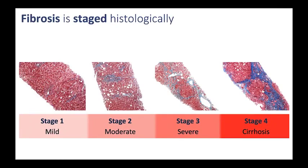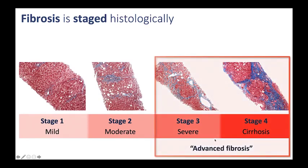Fibrosis is staged histologically. There are five stages of histologic fibrosis: stage 0, which is no fibrosis, and four stages of abnormal fibrosis — stage 1, mild; stage 2, moderate; stage 3, severe; and stage 4, cirrhosis. I want to draw your attention to stages 3 and 4, which collectively are known as advanced fibrosis. Patients with advanced fibrosis are typically thought of as having quite advanced disease. These patients often need surveillance for liver cancer, and they often need surveillance for esophageal varices. So the detection of advanced fibrosis is very important in terms of patient prognosis and management.